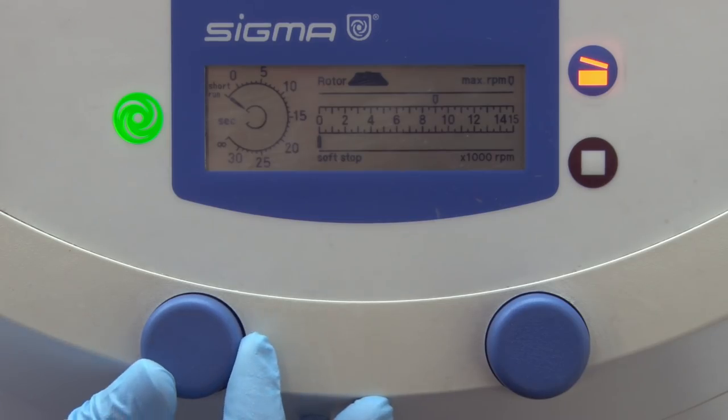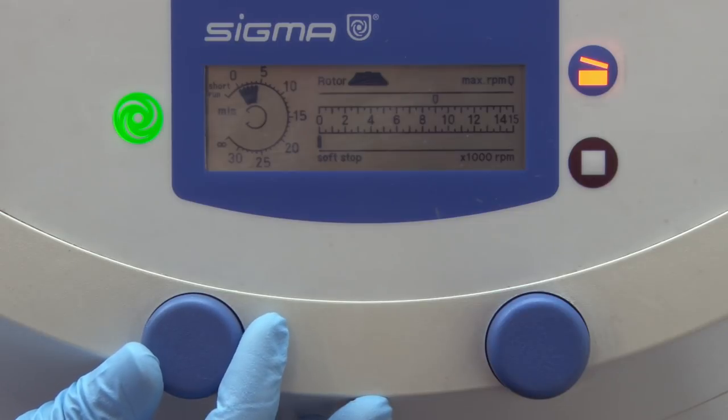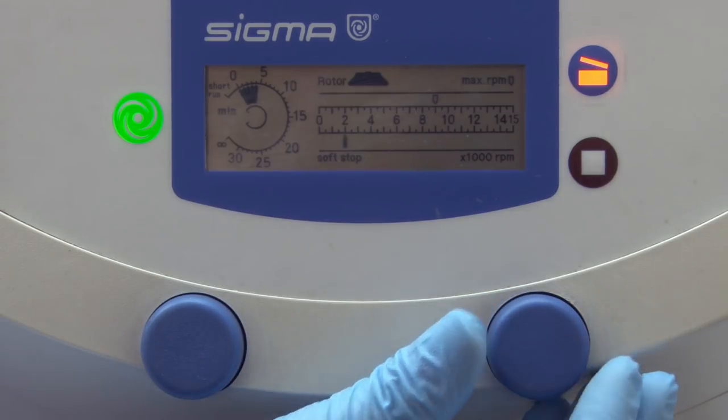Spin the sample at 1800 rpm for 4 minutes. Be careful not to overspin or the cells will be damaged.